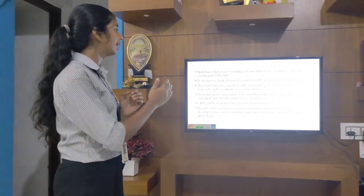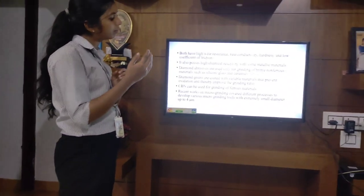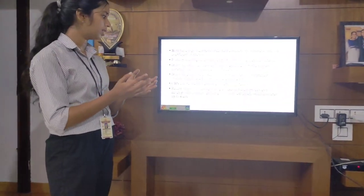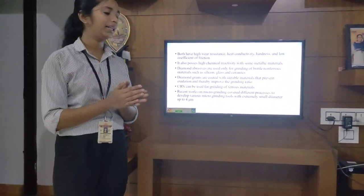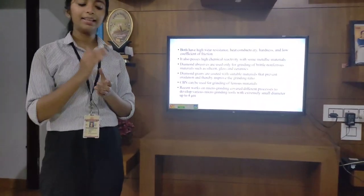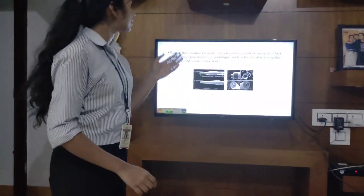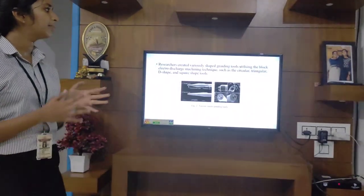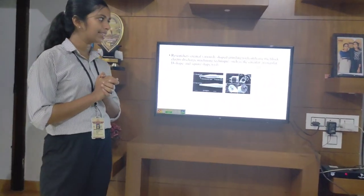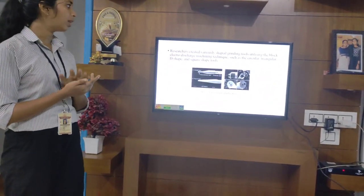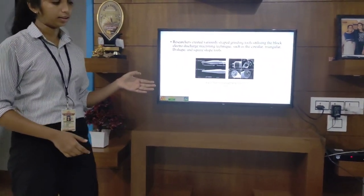CBN — cubic boron nitride — can be used for grinding of various materials. Recent works on microgrinding have covered different processes to develop microgrinding tools with extremely small diameters, down to 4 micrometers, which has already been achieved. Researchers have created variously shaped grinding tools utilizing block electro-discharge machining techniques, including circular, triangular, V-shaped, and square-shaped tools. Images of these tools are shown here.